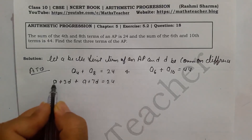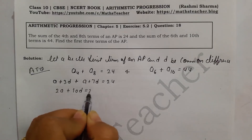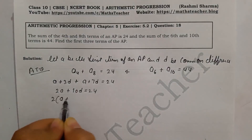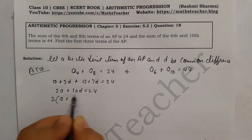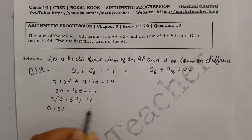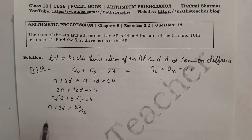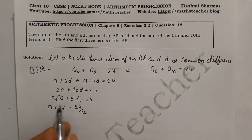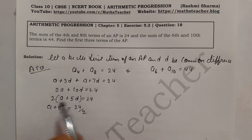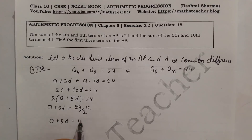So: (a+3d) + (a+7d) = 24, which gives 2a + 10d = 24. Taking 2 as common, we get a + 5d = 12. This is our first equation. Similarly for the second condition, a+5d and a+9d gives 2a + 14d = 44, and dividing by 2 gives a + 7d = 22.